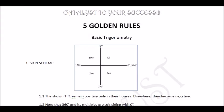For example, what is the sign of cos 120°? Since 120° is in the second quadrant, and in the second quadrant only sine is positive, cos must be negative. Similarly, for tan 200°: 200° lies in the third quadrant, and in the third quadrant only tan is positive, so tan 200° must be positive.